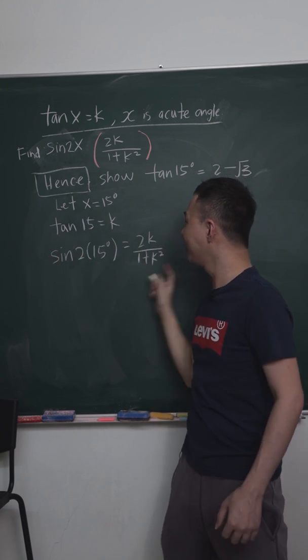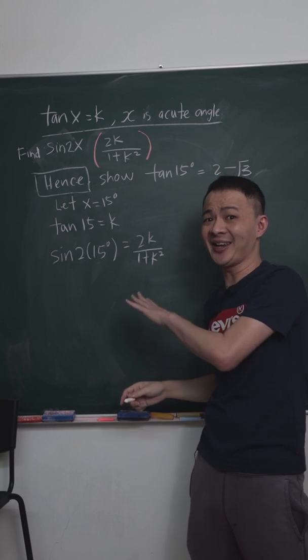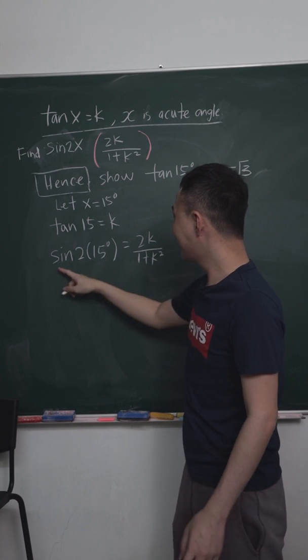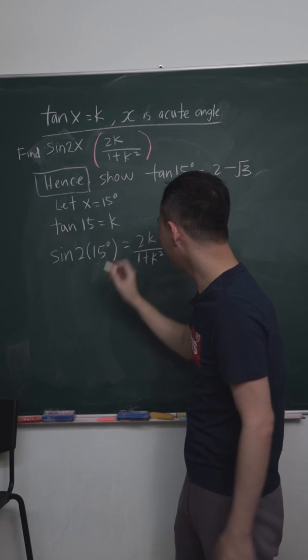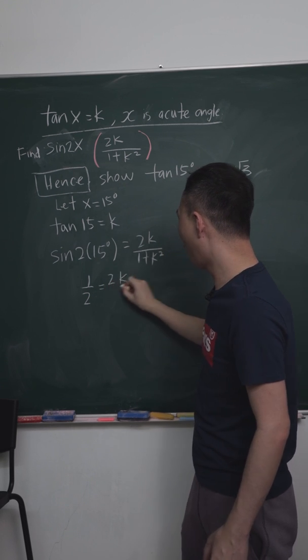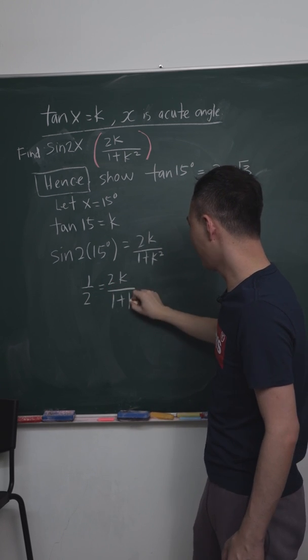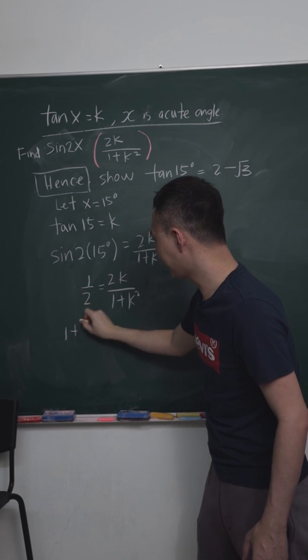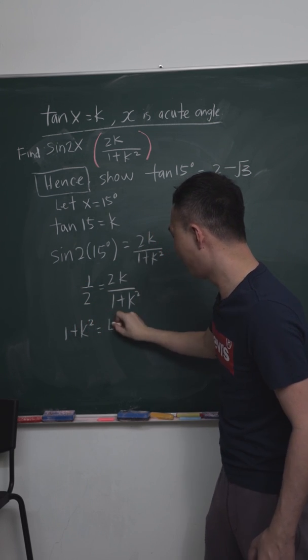Equals 2k over 1 plus k squared. From here, if I just want to make k the subject, then I kind of should be able to show here. So sine 30, you can type in the calculator, is 1 over 2 equals 2k over 1 plus k squared. And then by cross multiplication, I should get 1 plus k squared equals 4k.